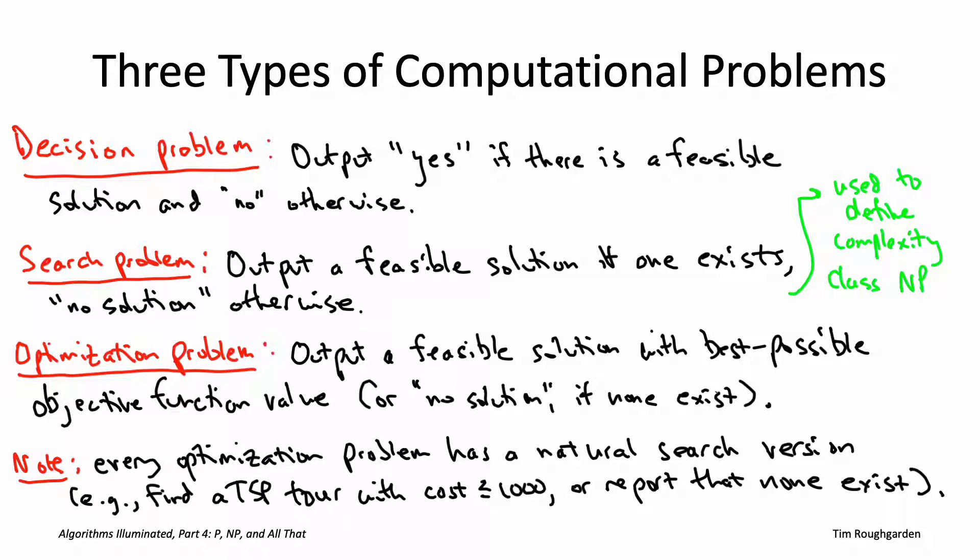But there's actually also a reduction in the other direction. If I gave you a box solving the search version efficiently, for example, if for the traveling salesman problem I gave you an efficient subroutine that took as input a TSP instance and a target tour cost and either reported back a tour with cost at most the target or correctly reported that no such tour existed.